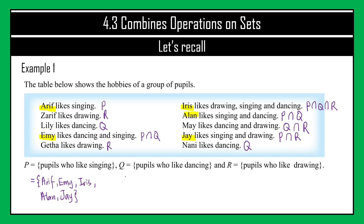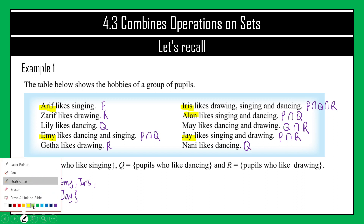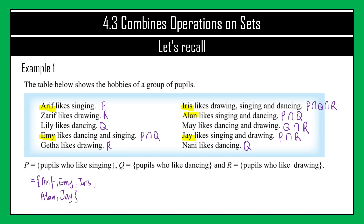For set Q, the pupils with label Q are Lily, Amy, Iris, Alan, May, and Nani — 6 pupils belonging to set Q.